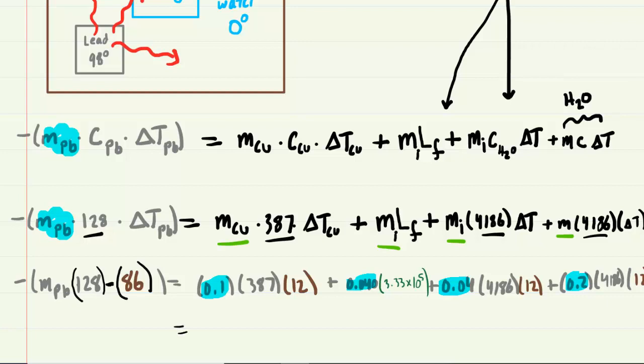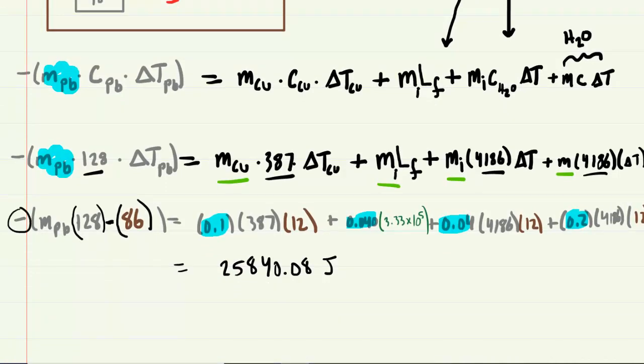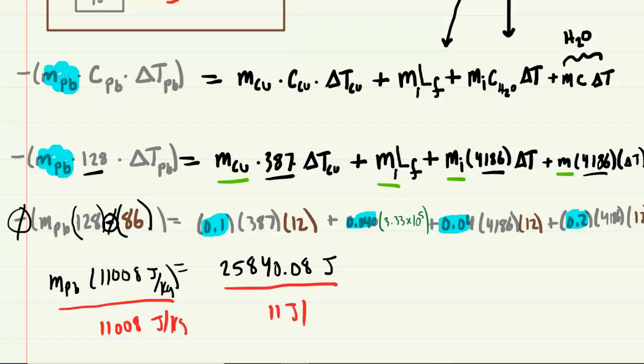Now, we multiplied all the values out on the right-hand side and added them together. And we ended up with 25,840.08. And this would have come out in terms of joules because it's an energy. On the other side, we have this negative sign along with the negative sign we just spoke of. So those would cancel. And 128 times 86 is 11,008. So we have the mass of lead times 11,008. And at this point, the unit would be joules per kilogram. We would finally divide both sides of the equation by 11,008 joules per kilogram. And when we do that, we can see that the mass of lead turns out to be approximately 2.35 kilograms. So this would be the final answer.